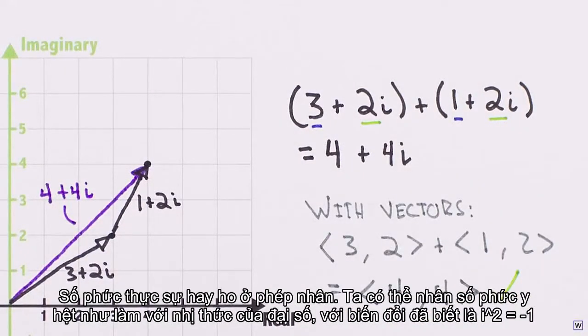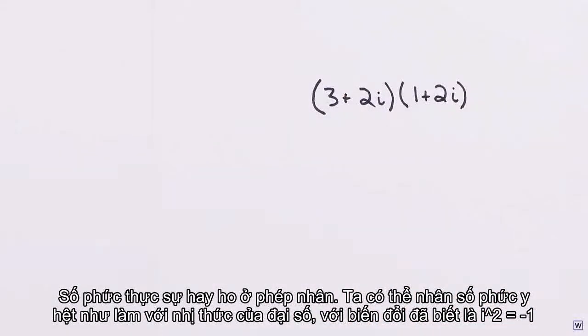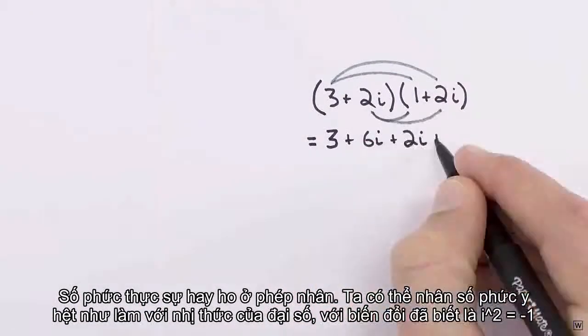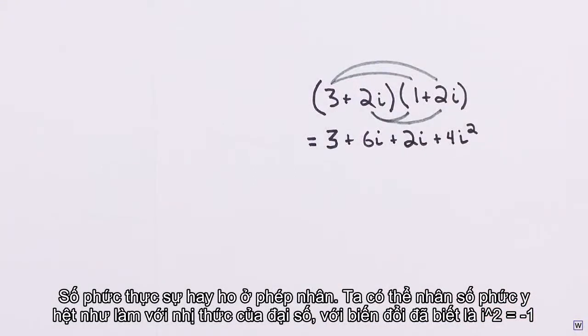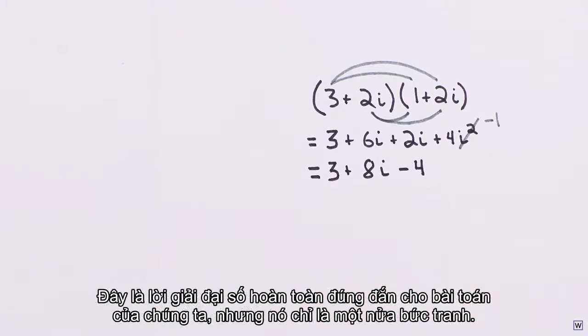Where complex numbers get really interesting is through multiplication. We can multiply complex numbers together by foiling, just as we do with binomials in algebra, with the minor complication that we know i squared can be replaced with minus one. This is a perfectly valid algebraic solution to our problem, but is only half the picture.